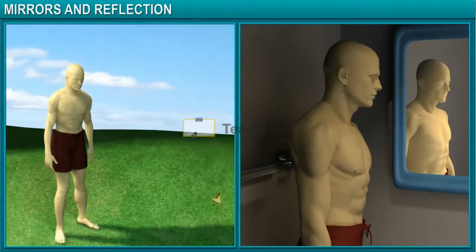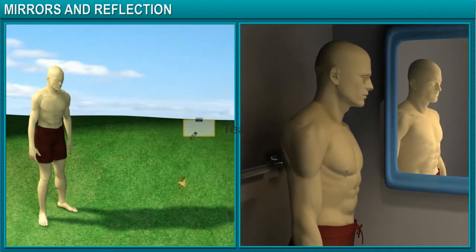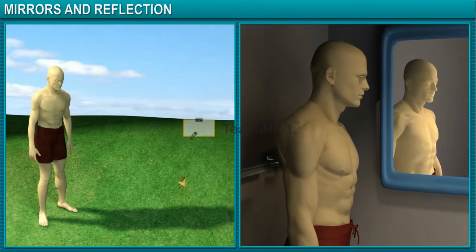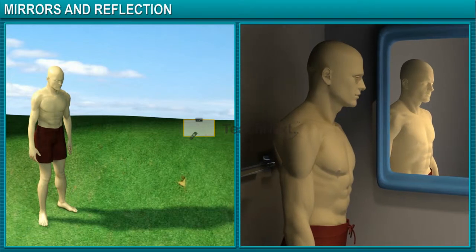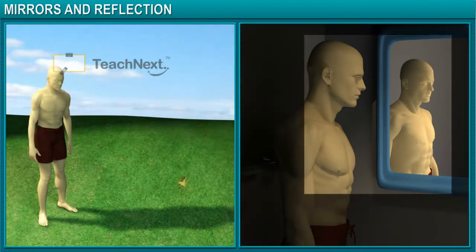Neither shadows nor images can exist without light. But there are some distinct differences between shadows and images. For example, your shadow is always black, whereas your image is in color.